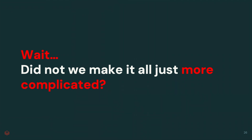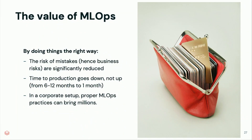We started with a notebook of 1,000 lines of code and now we have a package, many scripts, many arguments — so why did we do that? The risk of mistakes is significantly reduced, and mistakes can be worth millions of dollars. Time to production actually goes down because data science teams can be fully responsible end-to-end without relying on DevOps teams — removing the wall between departments. In a corporate setup, proper MLOps practices can bring in millions, which I've seen multiple times in my career.